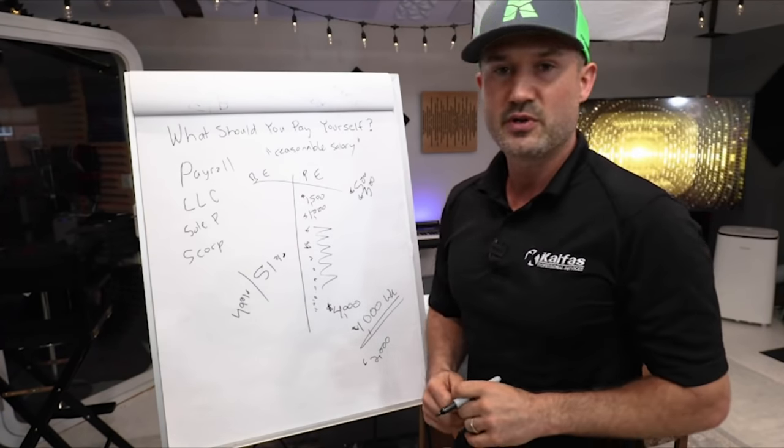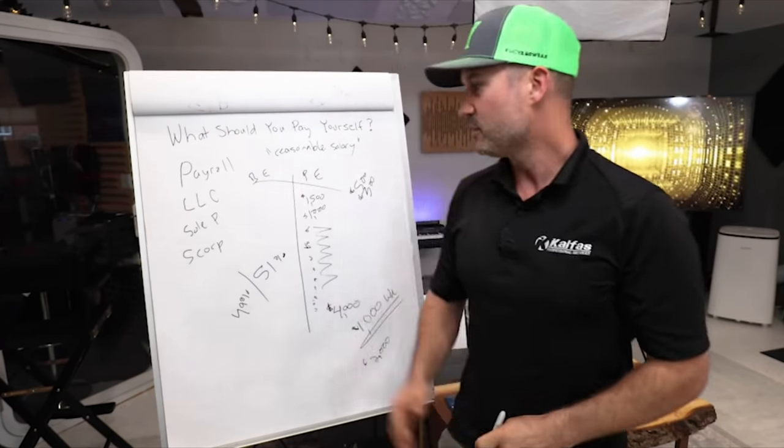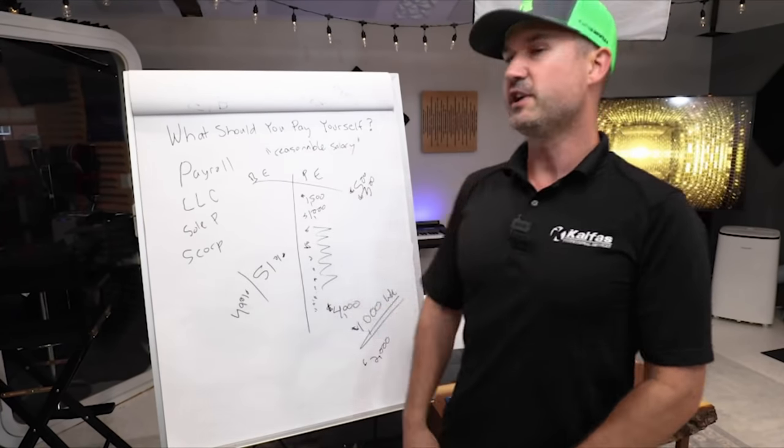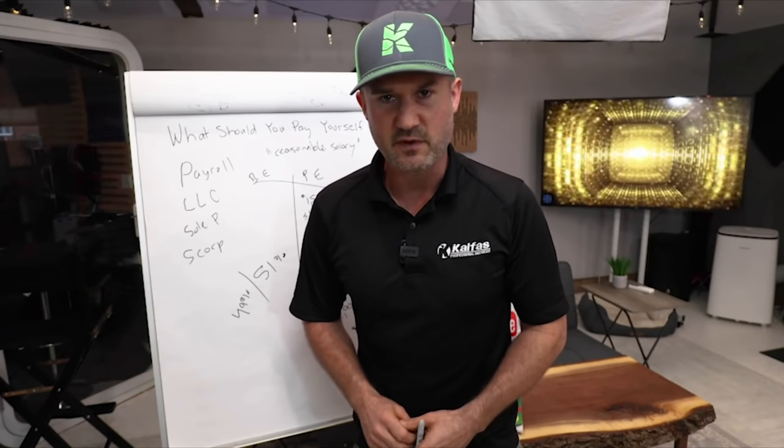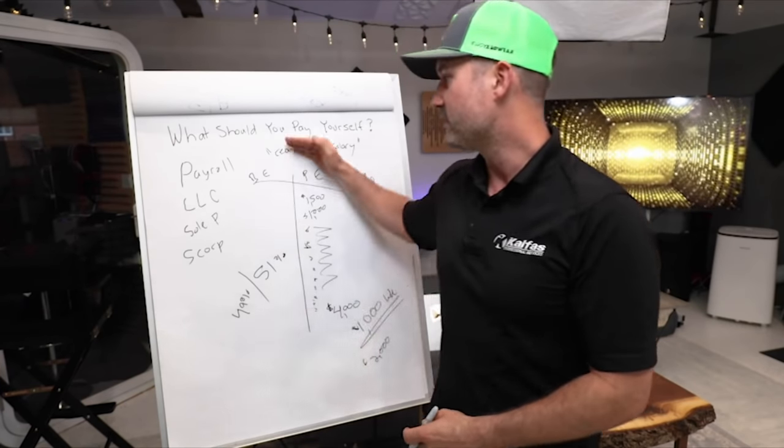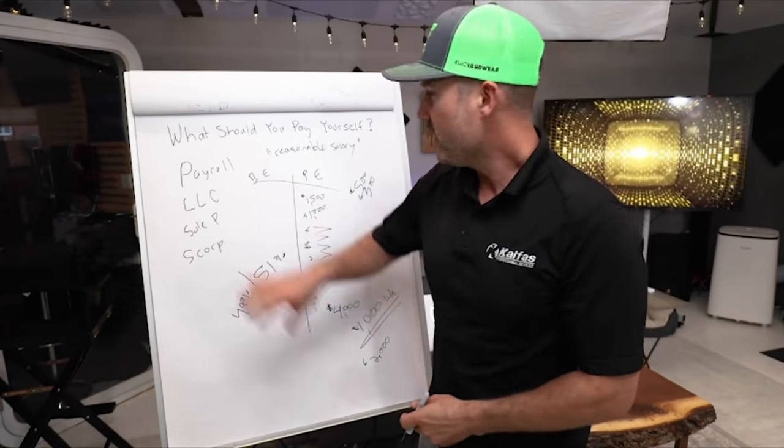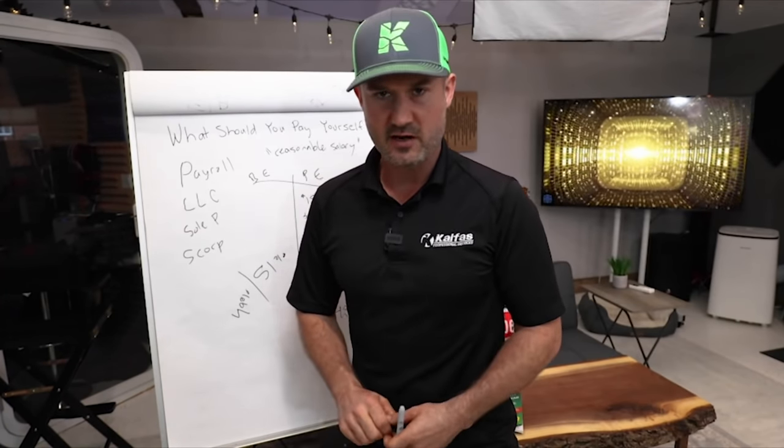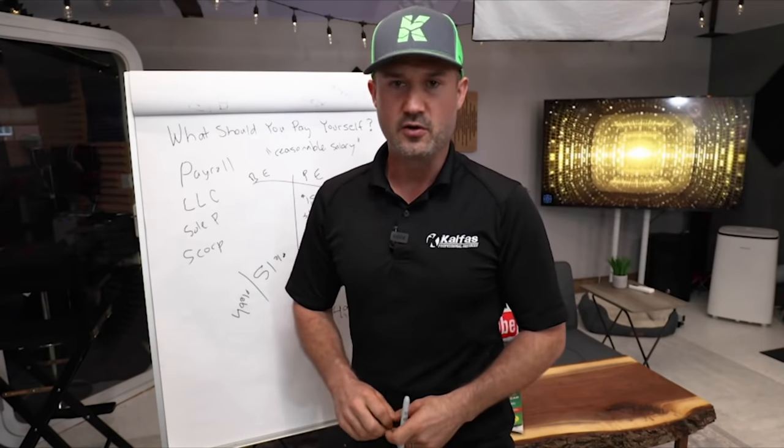I might even be wrong with that, it could be 60-40, 70-30, but this is the safe margin from all the business owners I've talked to. Taking distributions is like you literally take money out of the business account and you transfer it into your personal account. Whether you do a thousand bucks a week, at the end of the quarter you give yourself a five thousand dollar bonus, or at the end of the year after you pay all your taxes you transfer twenty thousand dollars into your personal account, or you go on a vacation.